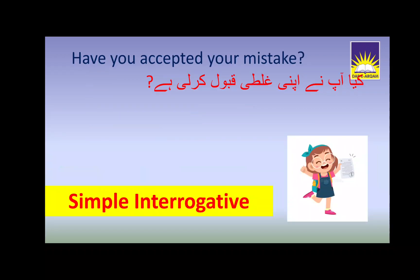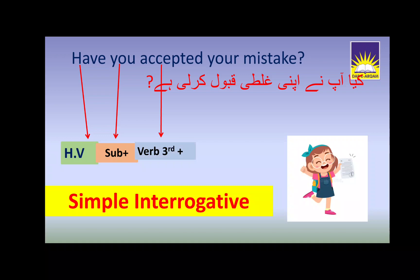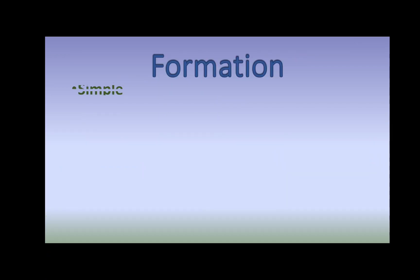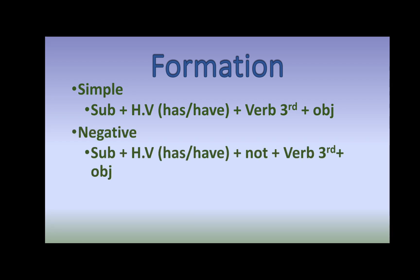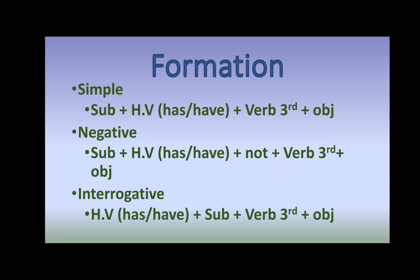For the simple interrogative sentence: 'Have you accepted your mistake?' — क्या आपने अपनी गलती कबूल कर ली है? In interrogative sentences, we start with the helping verb, then the subject, then the third form of verb, and finally the object. So the formation is — Simple: Subject + helping verb (have/has) + third form of verb + object. Negative: Subject + helping verb + not + third form of verb + object. Interrogative: Helping verb + subject + third form of verb + object. This is the present perfect tense.